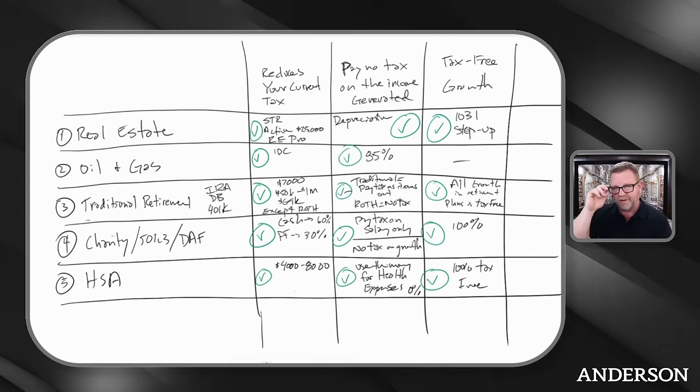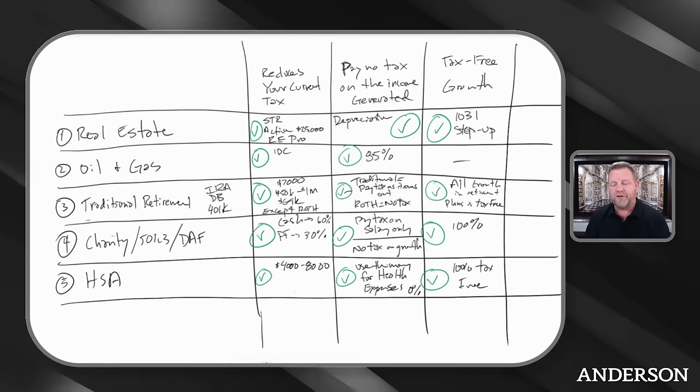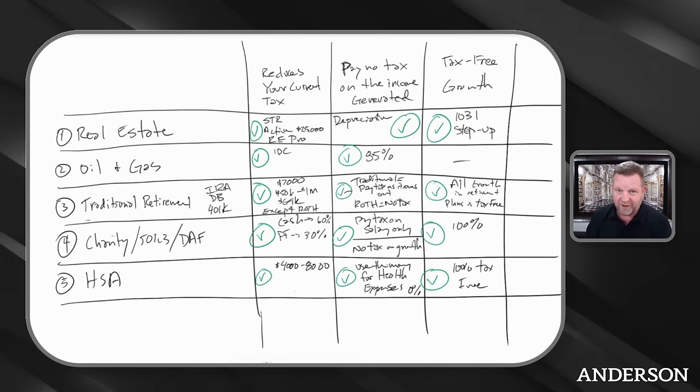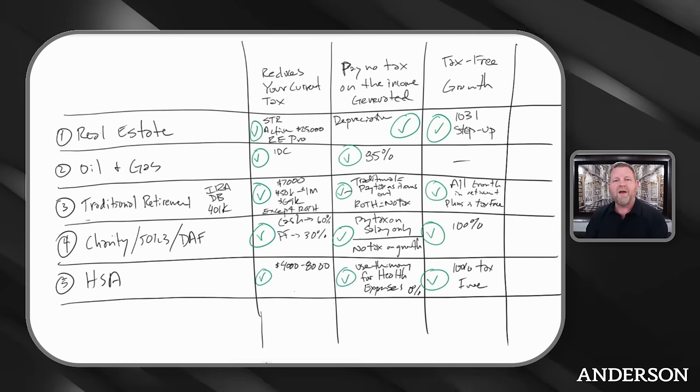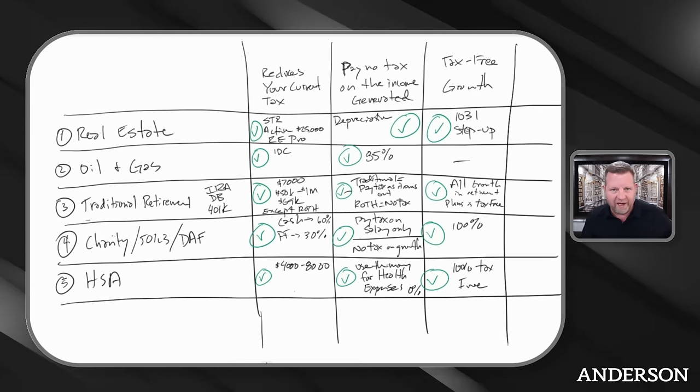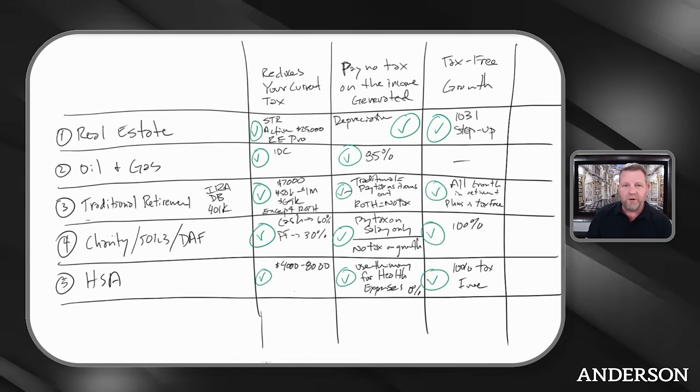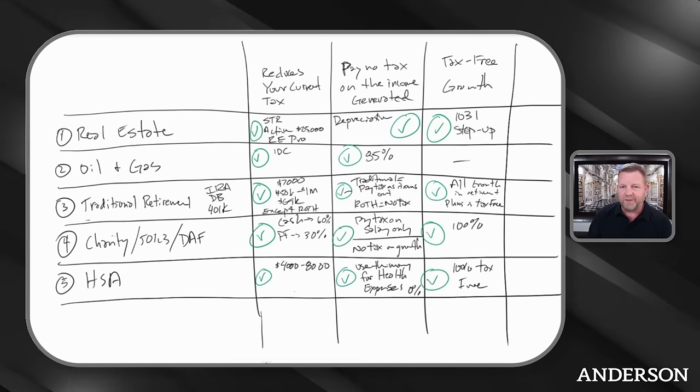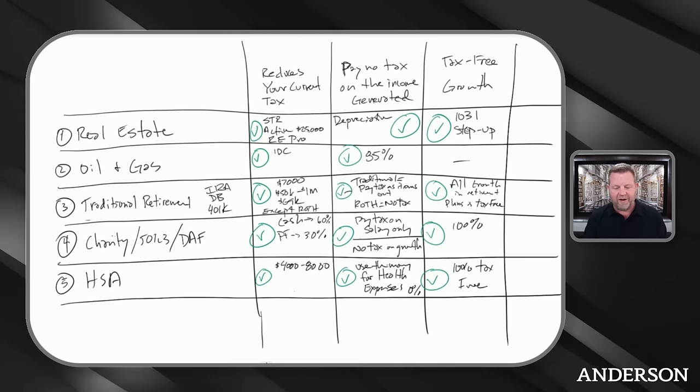It is possible after a certain age to roll it into a Roth. I think it's 64, 65. If it gets too big and you don't have enough medical expenses, there is the possibility to convert it over into a Roth. These are super effective tools. So there's a triple threat on that screen.